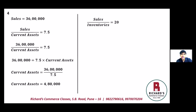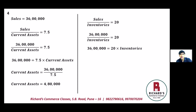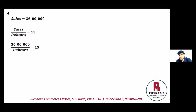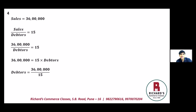Sales to inventories: 36 lakhs divided by inventories equals 20. Cross-multiplying, inventories equal 36 lakhs divided by 20, which is one lakh eighty thousand. Sales to debtors: 36 lakhs divided by debtors equals 15. Cross-multiplying, debtors equal 36 lakhs divided by 15, which is two lakh forty thousand.